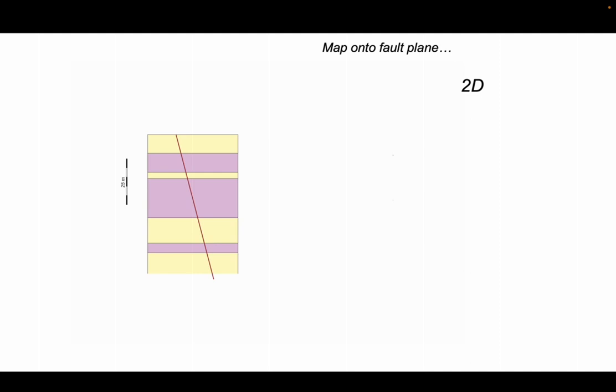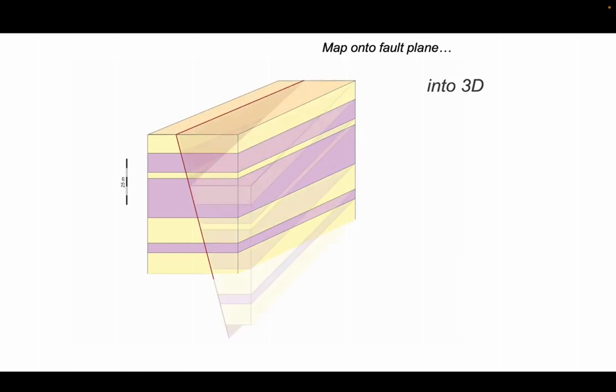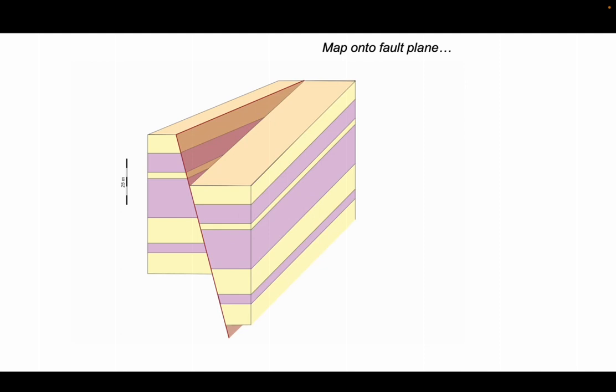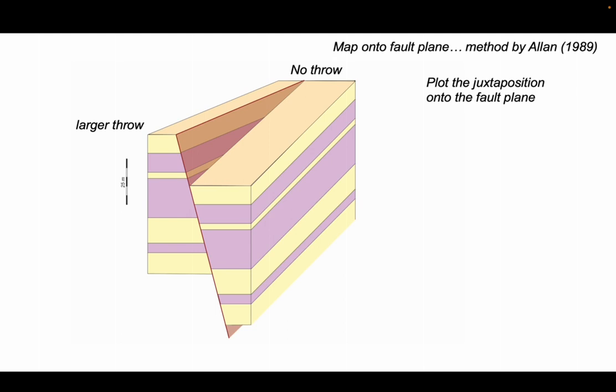Well, that was a two-dimensional approach. Let's move to three dimensions and fault our succession. So in this particular example, we've pinned our fault in the distance and we've got an increasing throw towards us. Remember, no throw at one end and a larger throw at the other end. And these ways of mapping onto the fault plane is a method developed by Urban Allen in the late 1980s.